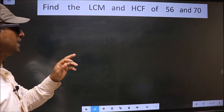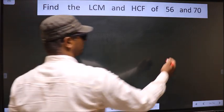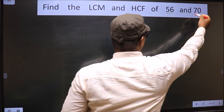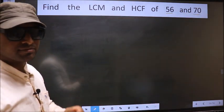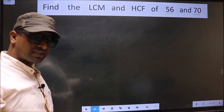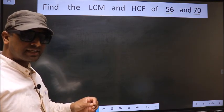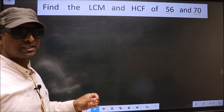Find the LCM and HCF of 56 and 70. To find the HCF and LCM, first we should do the prime factorization of each number separately.